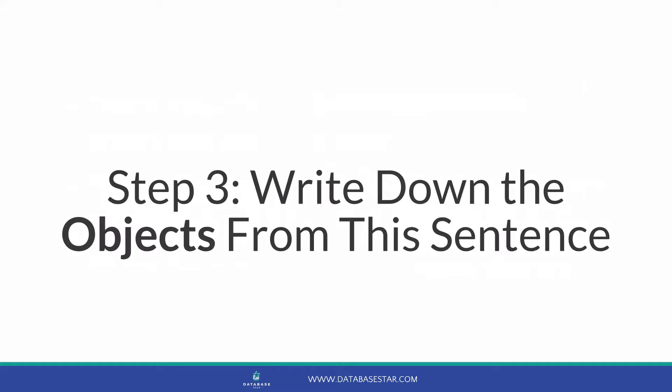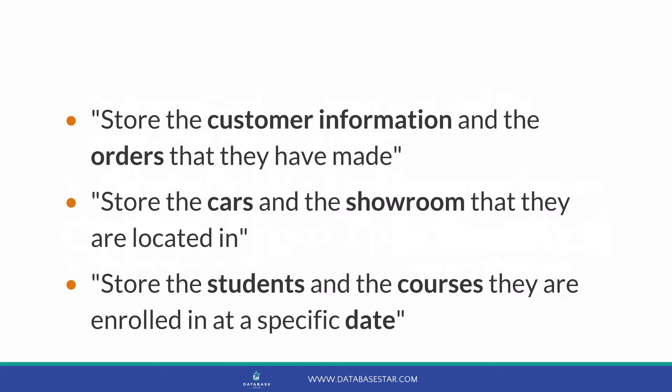Step three is to write down the objects from this sentence. This will help you work out what tables are going to be needed. Take a look at the sentence you just wrote down and identify the words that describe objects — these are nouns, or words that refer to things. For the first example, the objects are customer and orders. For the second, we have cars and showroom. For the third, we have students, courses, and date. We now have our objects, which will help us identify the one-to-many relationships in our database and draw them in a diagram.